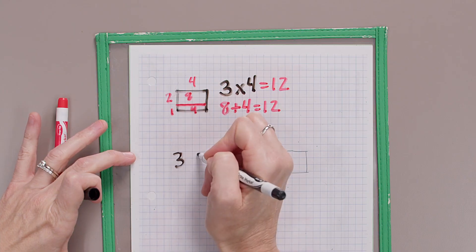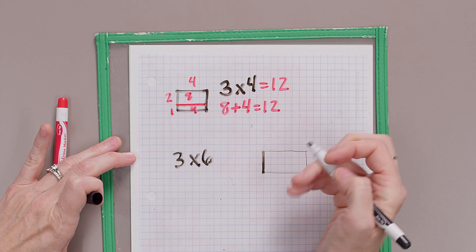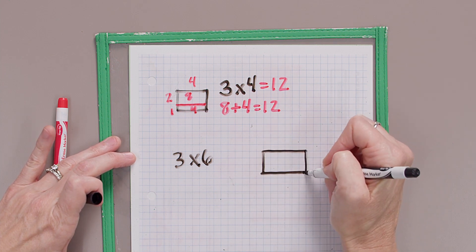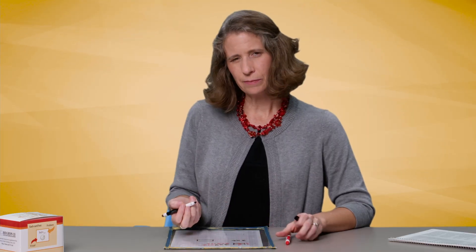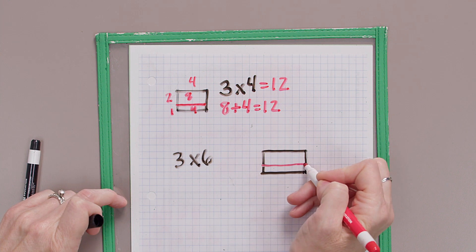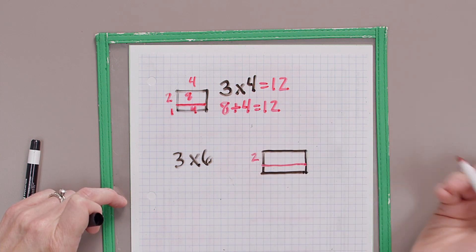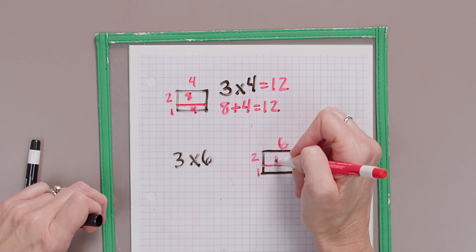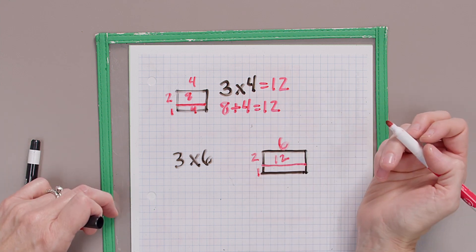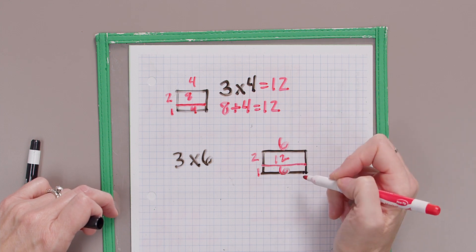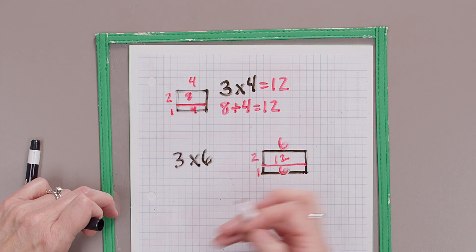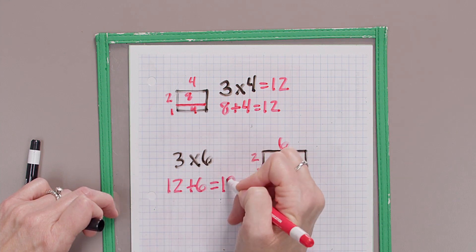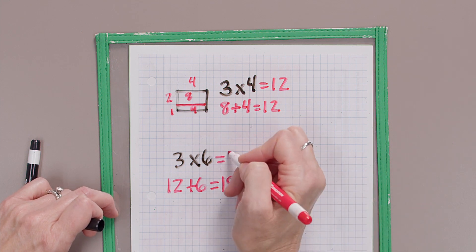Get out your graph paper and your pencils or markers and work along with me. Let's solve three times six. Draw an area rectangle three by six. I don't know three times six quite yet. What do I know? Well, I know two times six and I know one times six. So I'll draw my line. That's a two by six, and this here is a one by six. What's two times six? Let's double six — 12. One times six — six. Now I'll add those two products together to find the total of that area. 12 plus six equals 18. Three times six is 18.